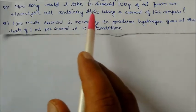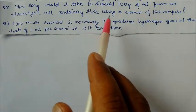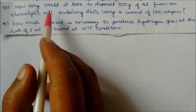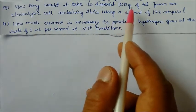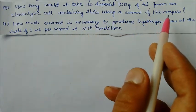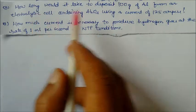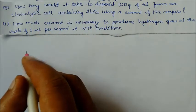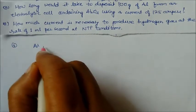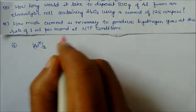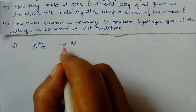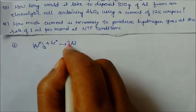Question 3: How long would it take to deposit 100 gram of aluminium from an electrolytic cell containing Al₂O₃ using a current of 125 ampere? We need to find time. Al₂O₃ means Al³⁺ ions — there are 2 moles of aluminium. Each Al³⁺ gains 3 electrons, so for 2 moles of Al, 6 electrons are required.